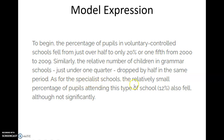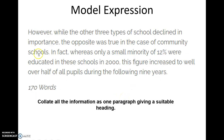As for the specialist schools, the relatively small percentage of pupils attending this type of school — that is 12% — also fell, although not significantly. I had already selected voluntary controlled schools for the decline, then the comparison with grammar schools, and later the specialist school as the minor change. Comparative language such as 'a marked increase' or 'decline' is expected when analyzing and writing.